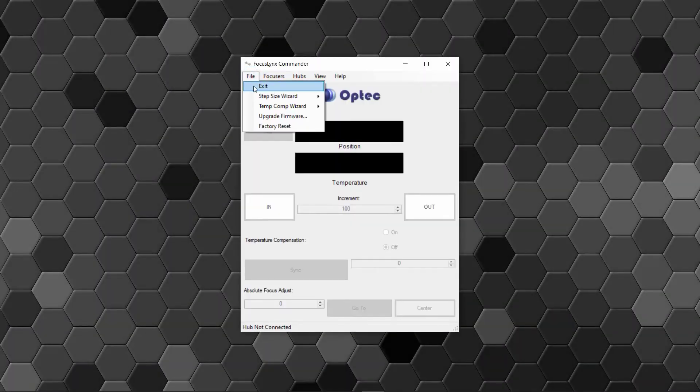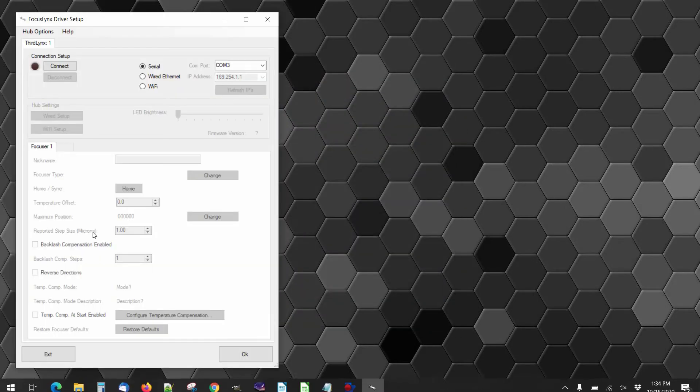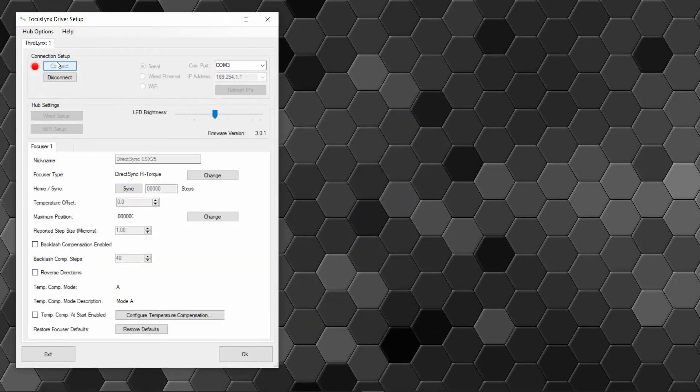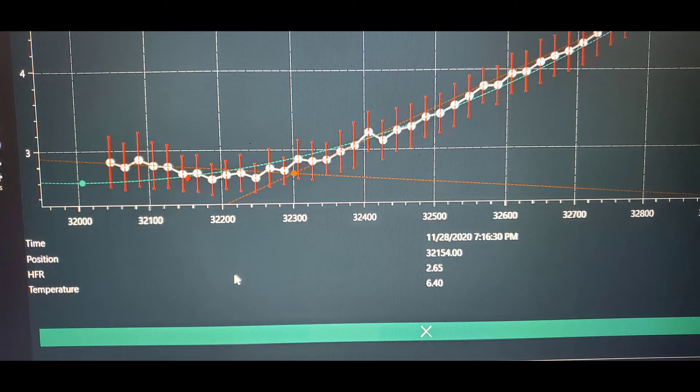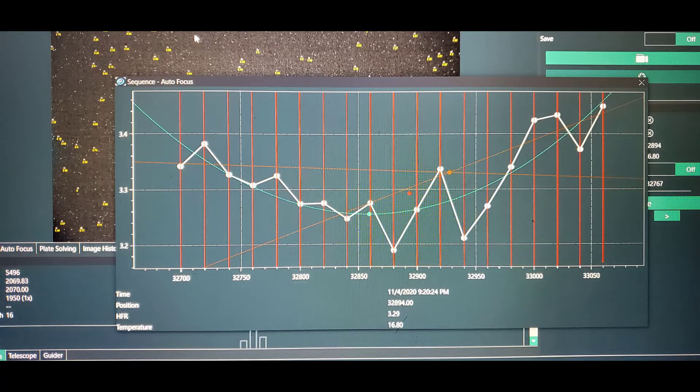So here we have the FocusLynx Commander software that I downloaded from the Optech website. Very easy to connect—just basically hit the connect button and was able to set up kind of my midpoint there, synchronize that. After that it really was trying it out in my case with Nina and getting that working and focusing. It was real easy and honestly it worked first or second try that I was out with it. So far it's been a breeze to use and has gotten things in focus with no more trial and error on my part.